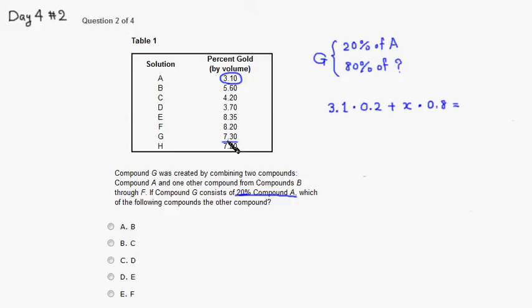Alright, so we just have to solve this equation. If you multiply that out, 2 times 1 is 2 and 2 times 3 is 6, so 0.62 plus 0.8x equals 7.3.